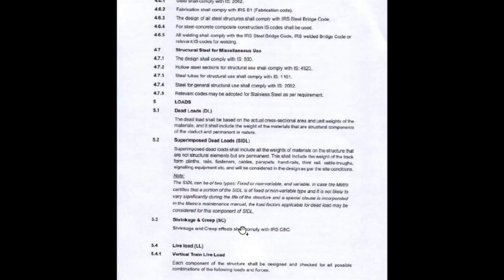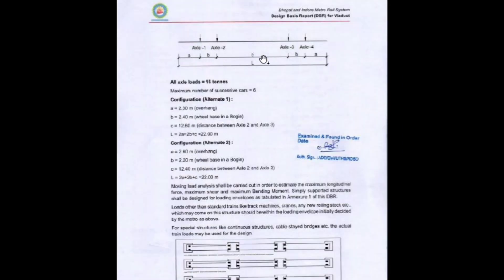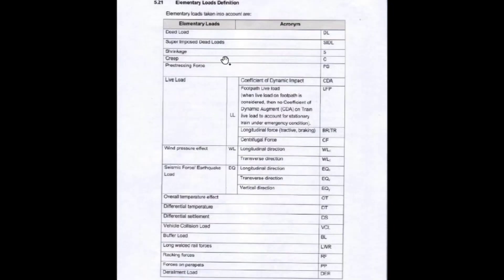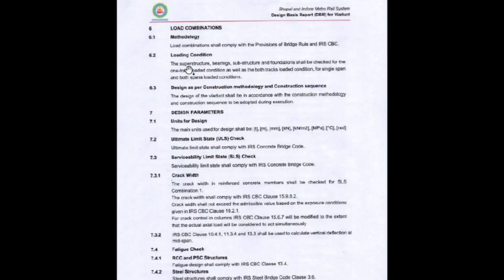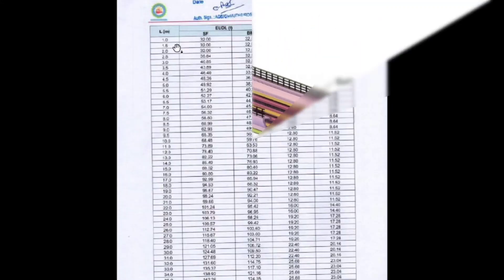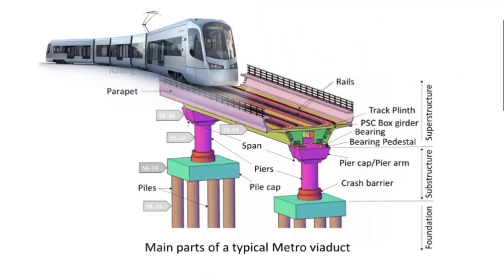DBR mein rolling stock ka system bhi mention hota hai — kitne axles honge, kya loads honge, load combinations kaise honge. Elementary load definitions aur phir load combinations — jo codes hame follow karne hain — ye DBR ke main parts hain. These are the main parts of a typical metro viaduct — rolling stock, parapet walls, rails, superstructure.